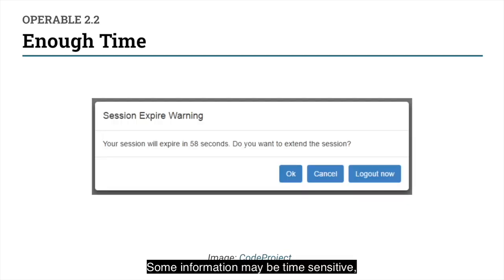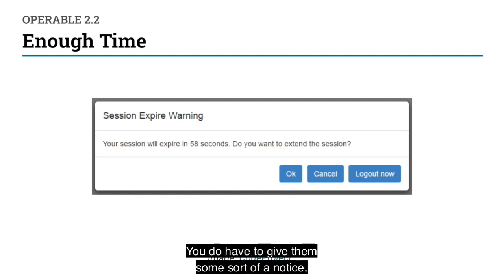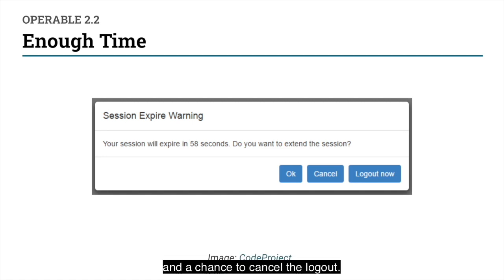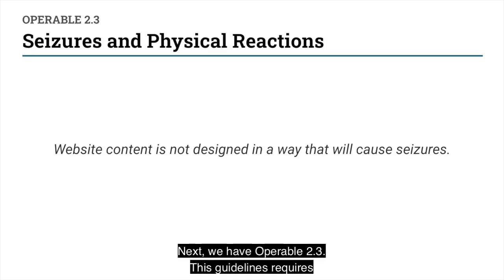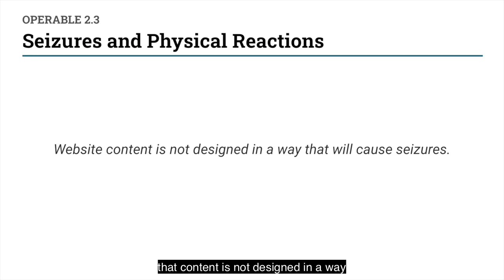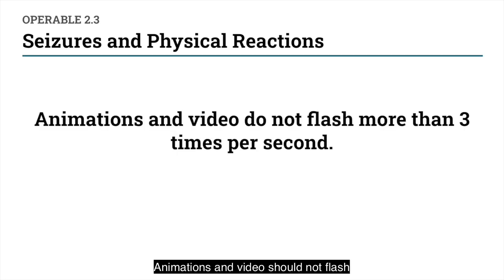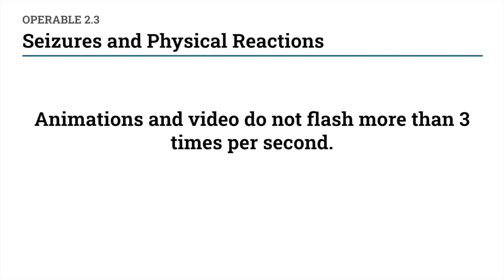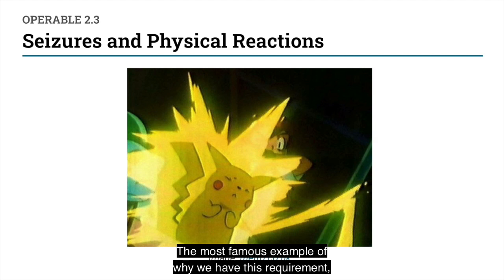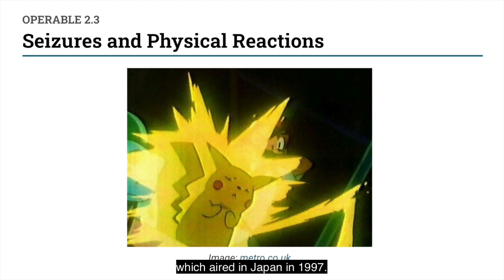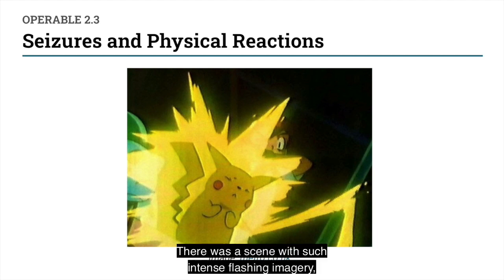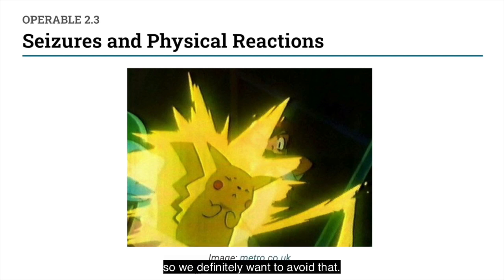Some information may be time sensitive, such as a banking website that requires a user to be logged out after a certain period of inactivity. You can't just log users out without warning — you do have to give them some sort of notice and a chance to cancel the logout. Next, we have Operable 2.3. This guideline requires that content is not designed in a way that will cause seizures. Animations and video should not flash more than three times per second. The most famous example of why we have this requirement would be an episode of Pokemon which aired in Japan in 1997 — there was a scene with such intense flashing imagery that it caused seizures in almost 700 children.